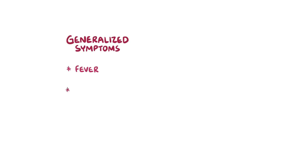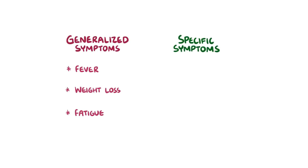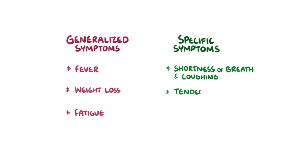Sarcoidosis can cause a variety of generalised symptoms like fever, weight loss, and fatigue. But in addition, there can be specific symptoms depending on which part of the body is most affected. These range from shortness of breath and coughing, to tender leg nodules, to vision changes.